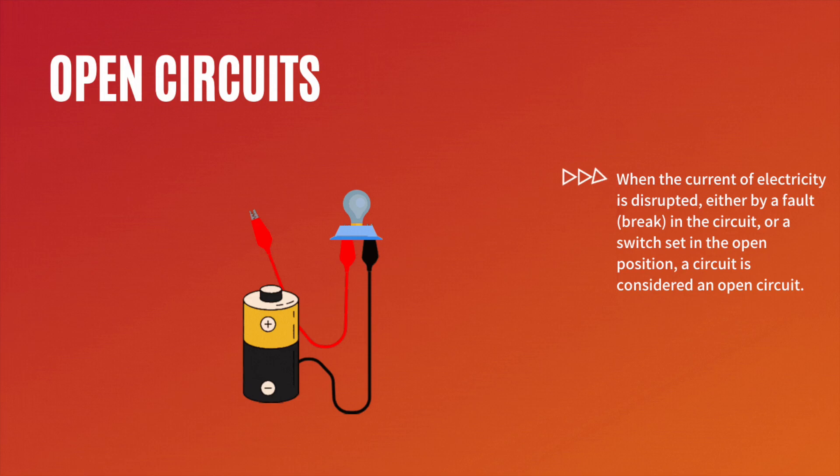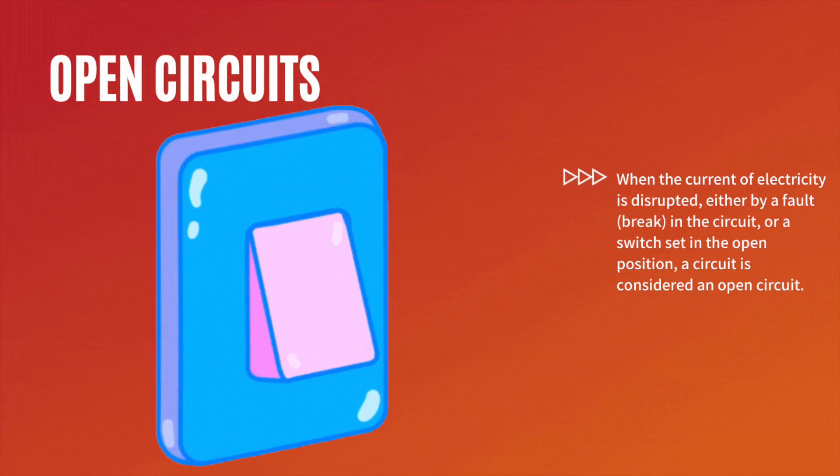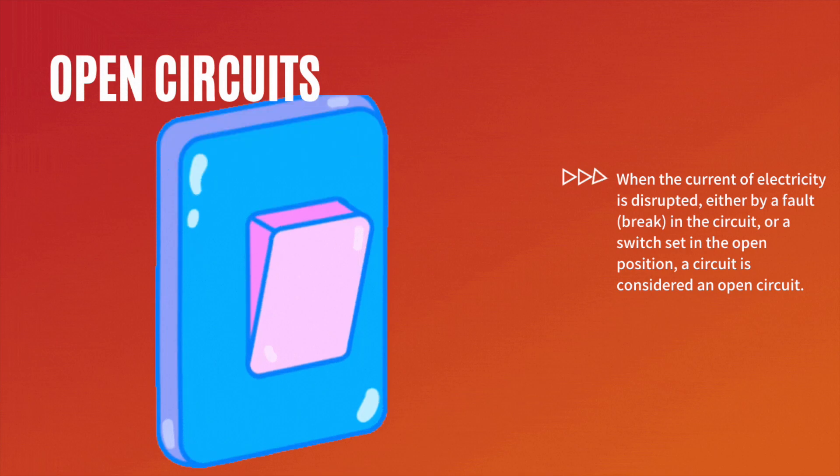When the current of electricity is disrupted, either by a fault or break in a circuit, or by the flicking of a switch, the circuit is considered open and electrons are not able to move freely.